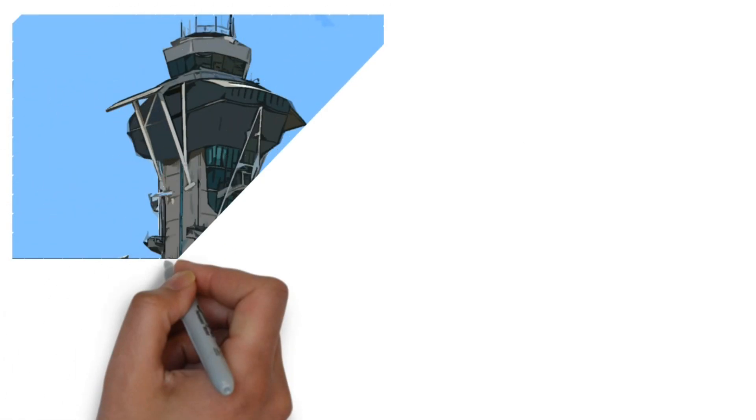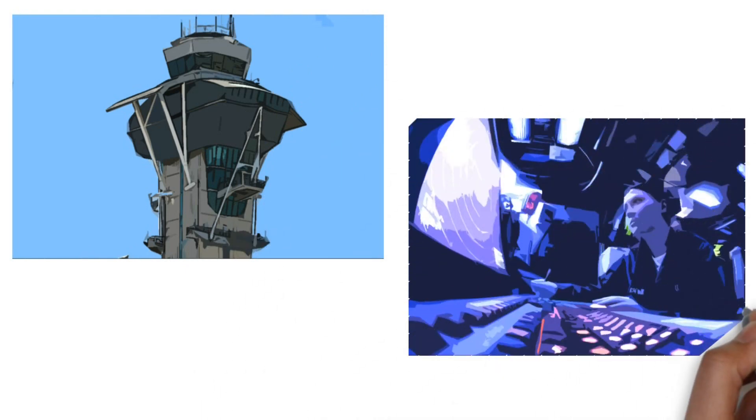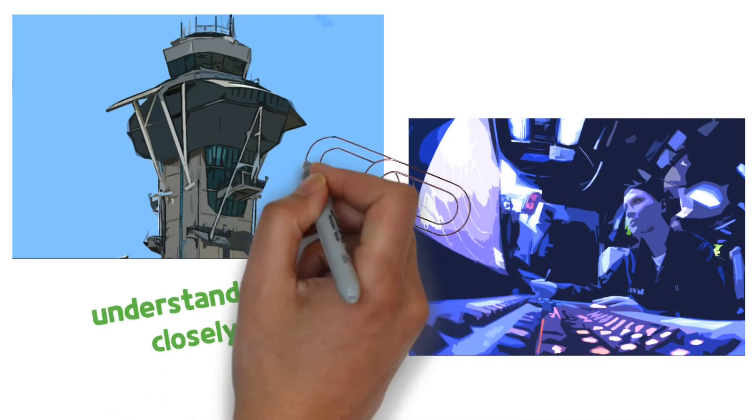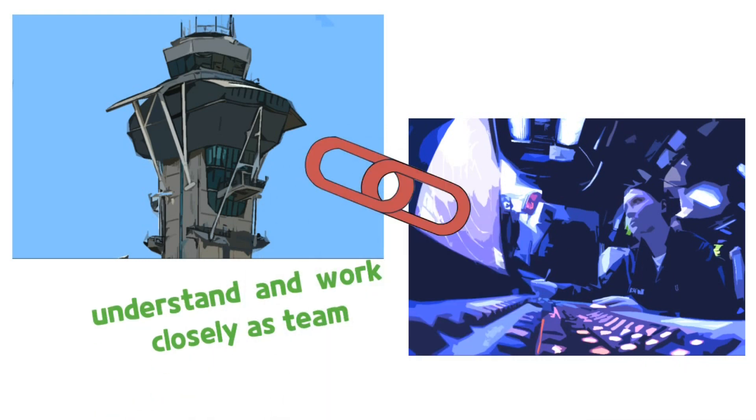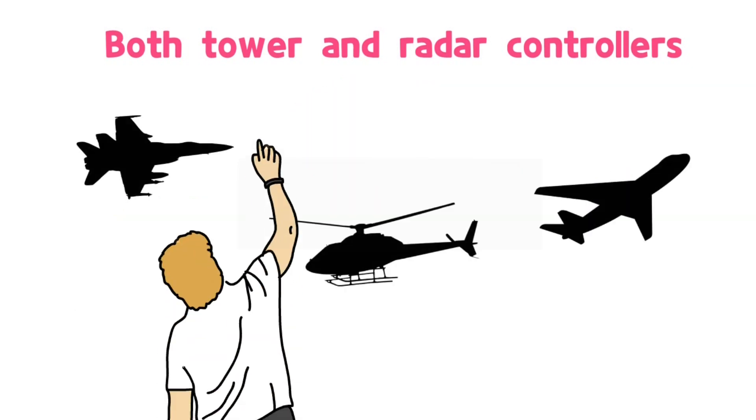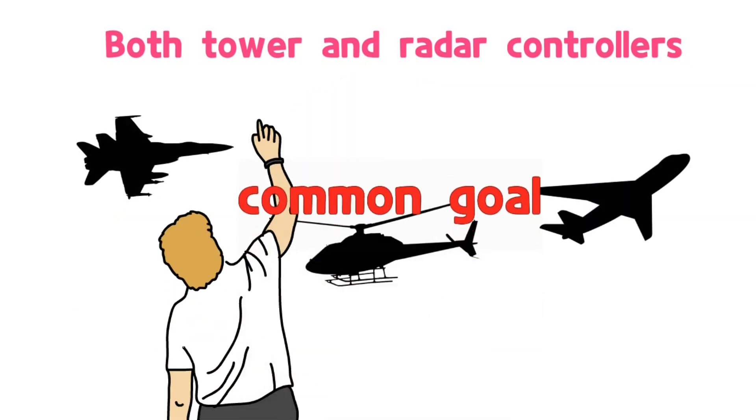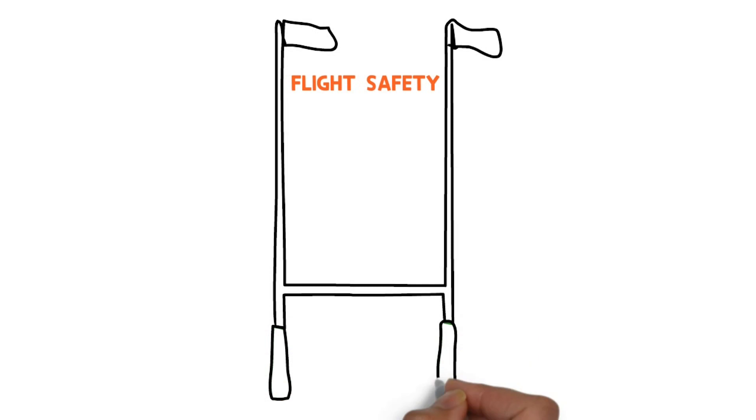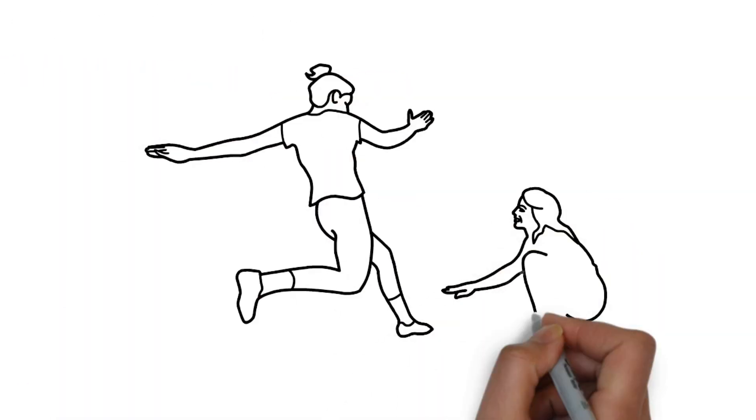In other words, the tower controller and the radar controller are not only doing their own work, but also understanding and working closely as a team is crucial and essential. Both tower controllers and radar controllers exist to prevent collisions and maintain order of air traffic and pursue common goals. That is, flight safety. Under this common goal, the tower controller and radar controller are just a team.